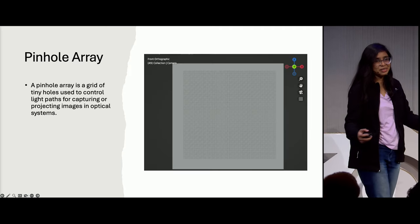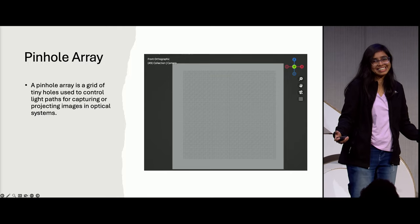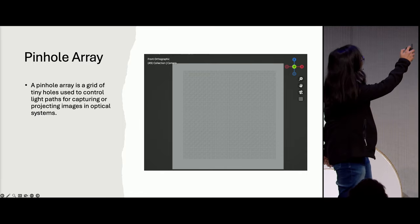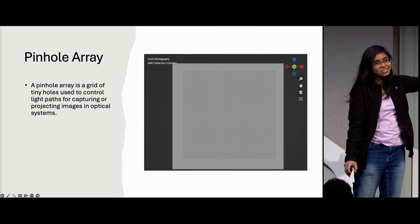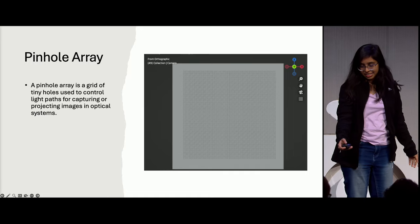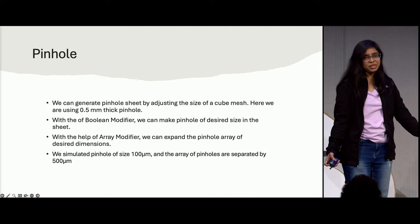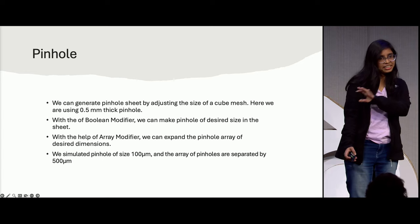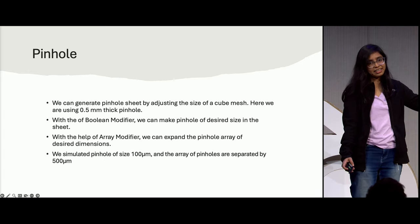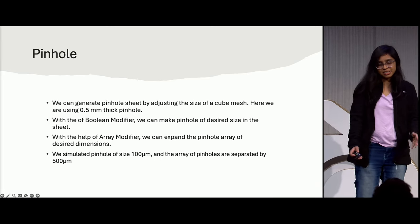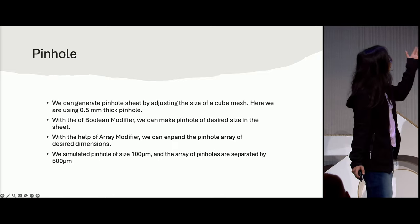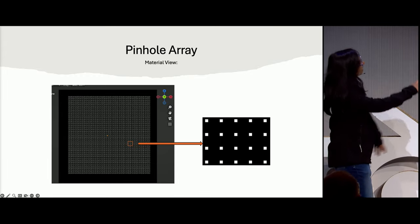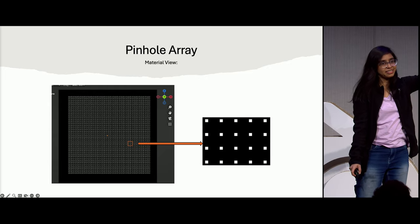What is a pinhole array? A pinhole array is a grid of tiny holes separated at equal distances. As you can see, there are small holes separated at equal distances — this is the solid view. It's easily modeled: use a cubic mesh to get 0.5 mm thickness, then with the Boolean modifier we get tiny holes, and with the array modifier we can adjust the array length. Through testing, we arrived at an optimal pinhole size of 100 micrometers, separated by 500 micrometers.